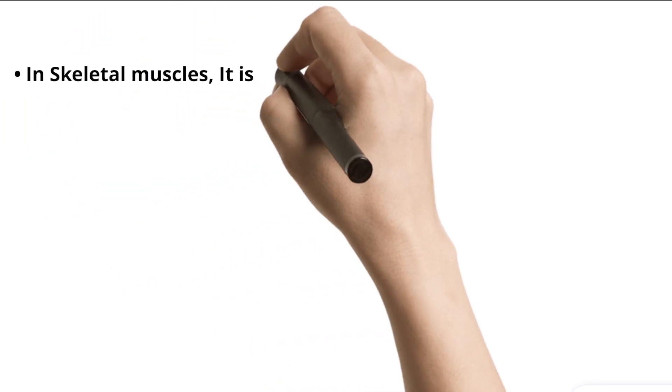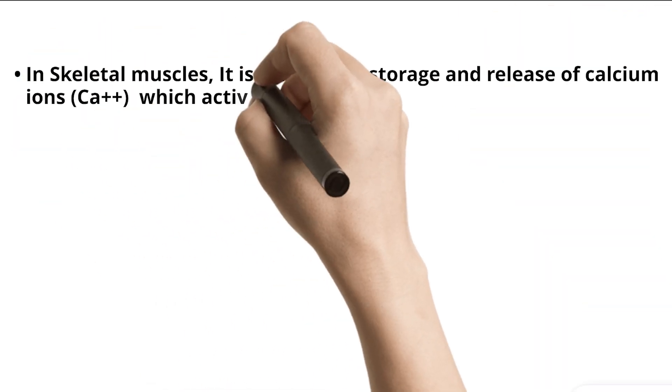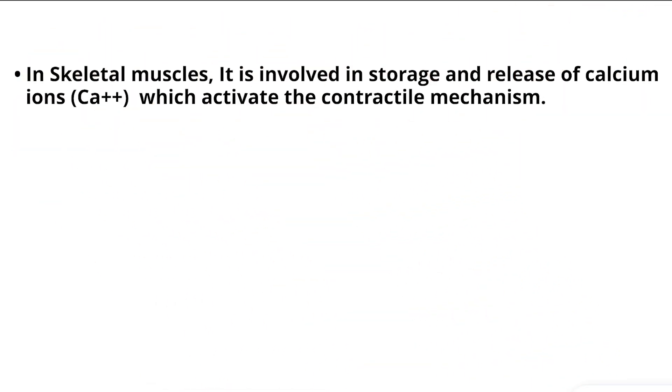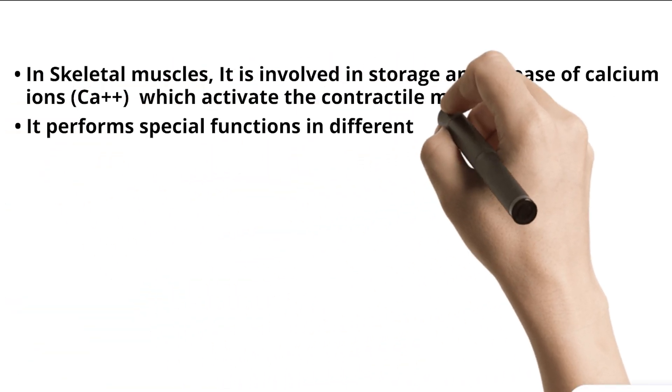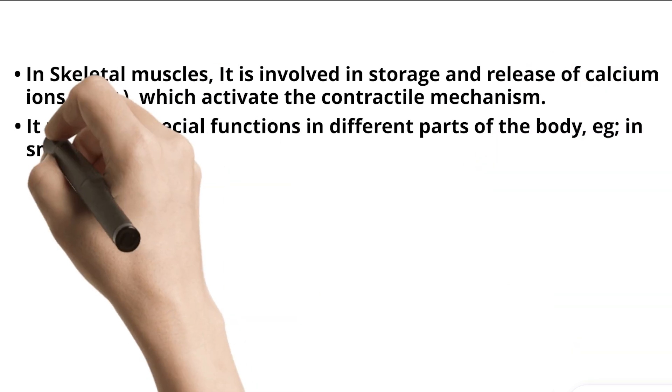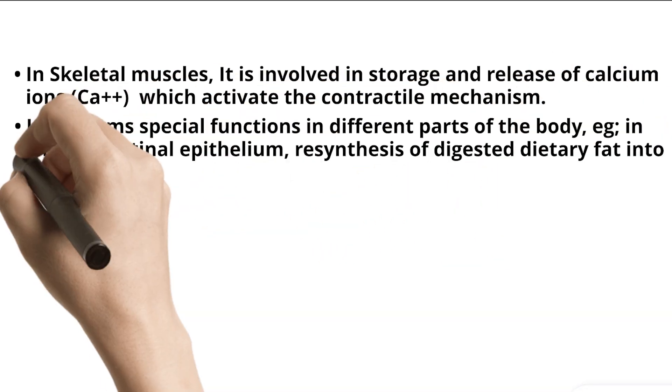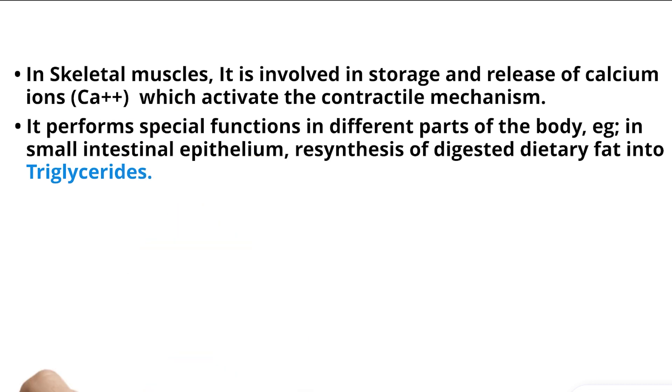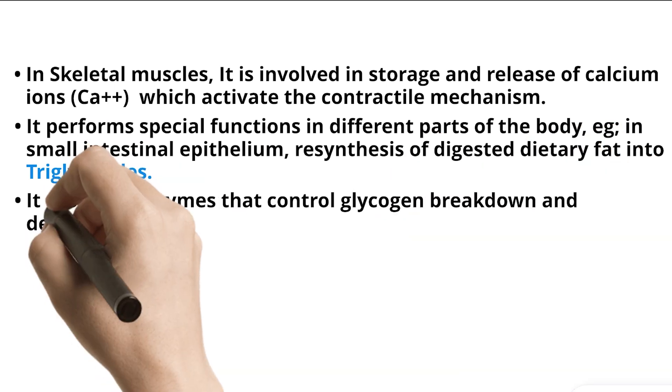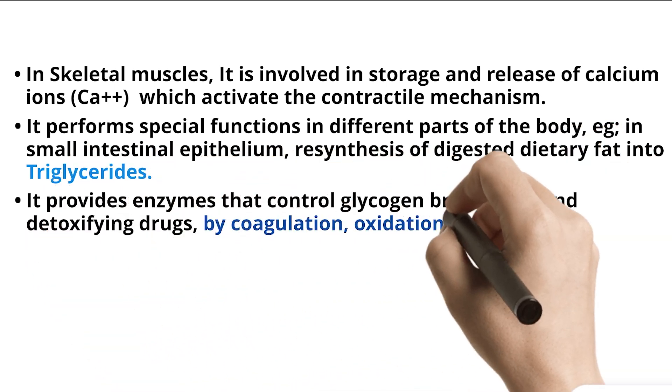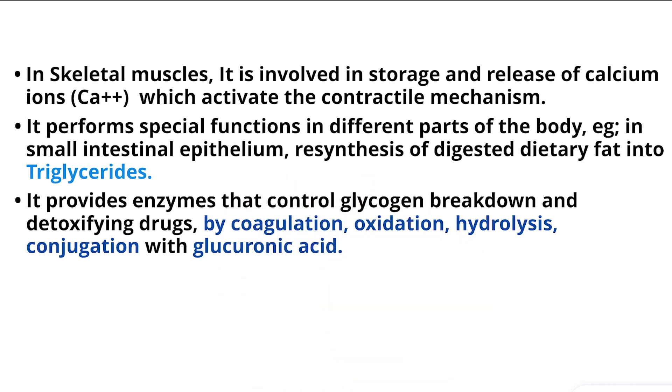In skeletal muscles, it is involved in storage and release of calcium ions, which activate the contractile mechanism. It performs special functions in different parts of the body, for example, in small intestinal epithelium, resynthesis of digested dietary fat into triglycerides. It provides enzymes that control glycogen breakdown and detoxifying drugs by coagulation, oxidation, hydrolysis, conjugation with glucuronic acid.